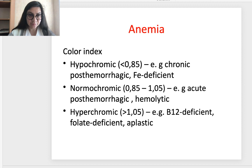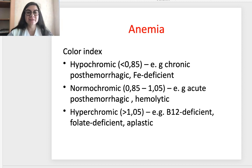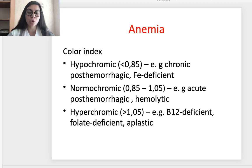The color index is another sign. According to the color index level we classify anemia as normochromic, hypochromic, or hyperchromic. When it is normal — from 0.85 to 1.05 — it is normochromic anemia, most often acute post-hemorrhagic or hemolytic anemia. If the color index is less than 0.85 it is hypochromic anemia, typical for chronic post-hemorrhagic or iron deficiency anemia. If more than 1.05 it is hyperchromic anemia, characteristic of B12-deficient anemia, folate-deficient anemia, and aplastic anemias.